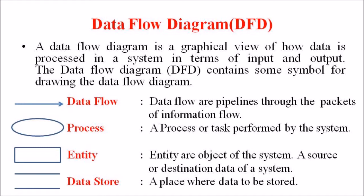So students, these are the four basic symbols available. Data flows are represented by arrowheads. Processes are represented by a circle or ellipse. Entities are represented by a rectangular box. And finally, data stores or databases are represented by two parallel lines.